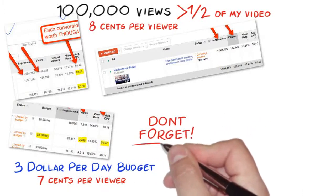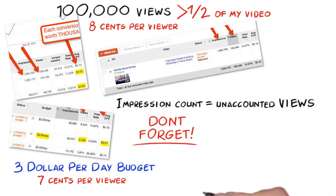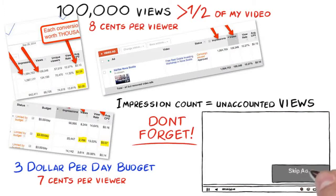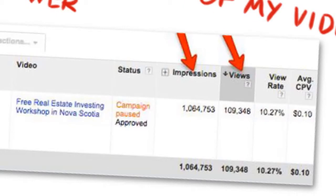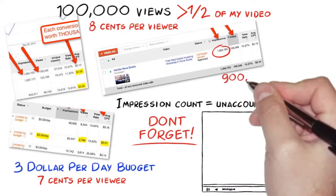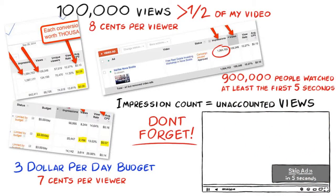Now, let's not forget, impression count is also very important as these are unaccounted views — views for the first 5 seconds where the user can skip, or a little less than half of the video before they can skip the ad. These are forced views which are unaccounted. As you can see from this screenshot, it has over 100,000 paid views. But take a look at this: we have over 1 million impressions and over 100,000 views, which means 900,000 plus people who watched at least 5 seconds or a little less than half of the video — and we paid absolutely nothing for those 900,000 views.